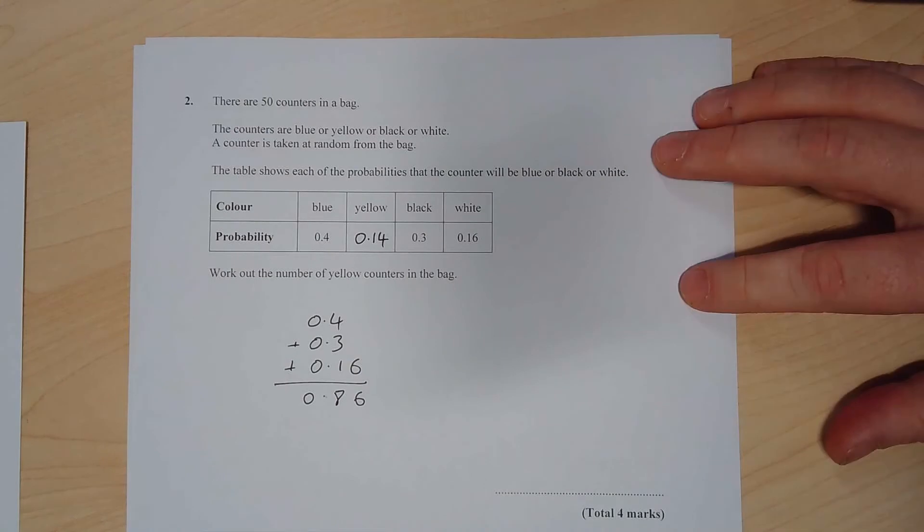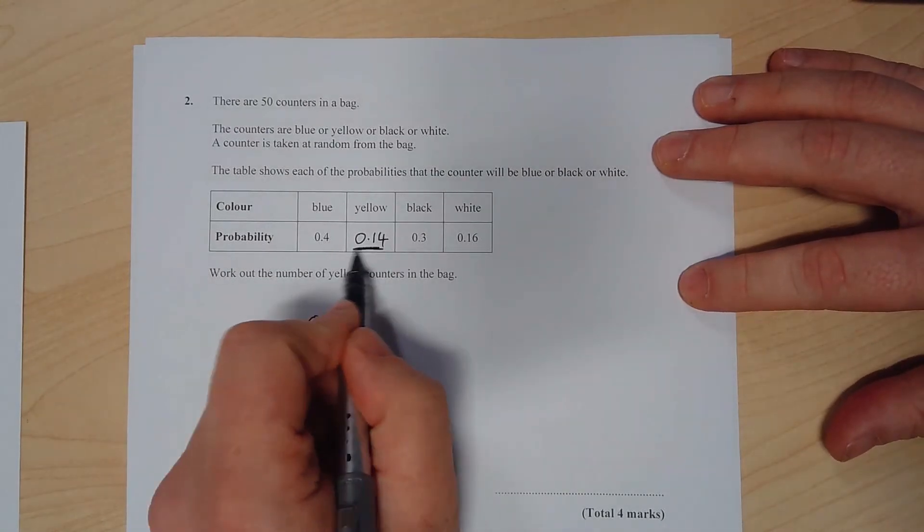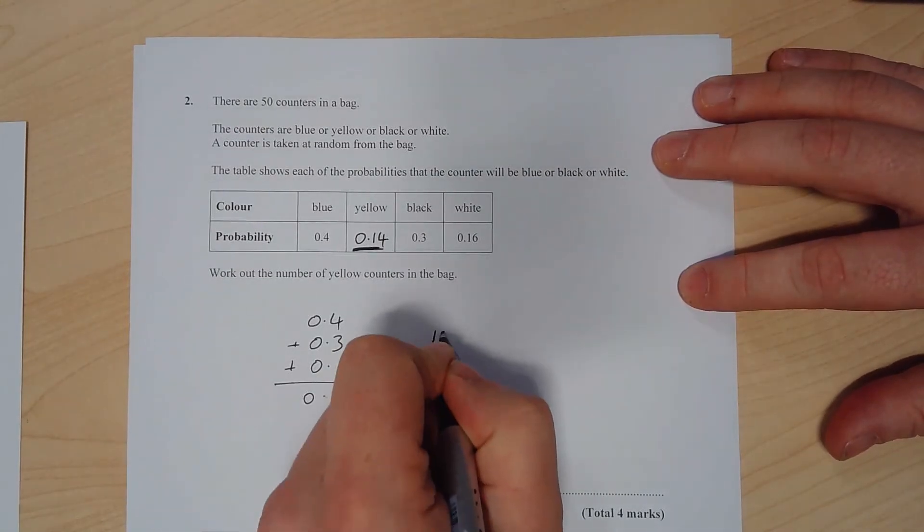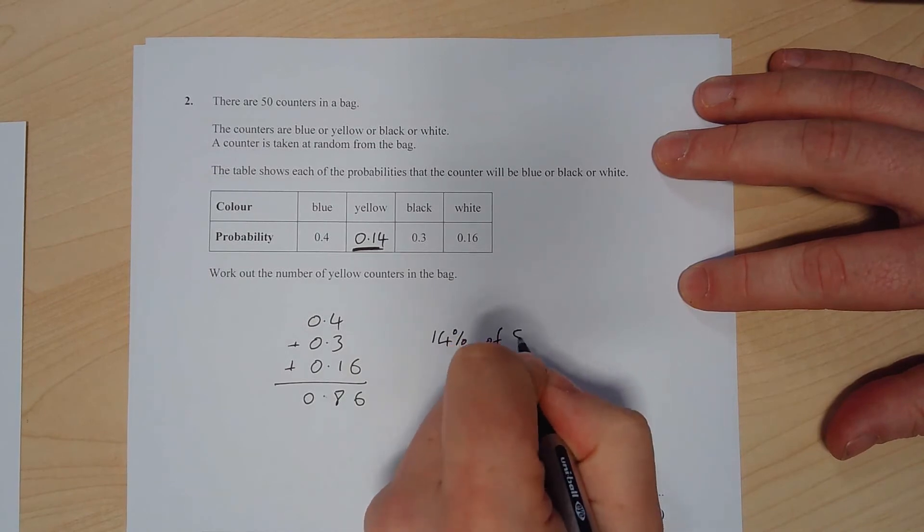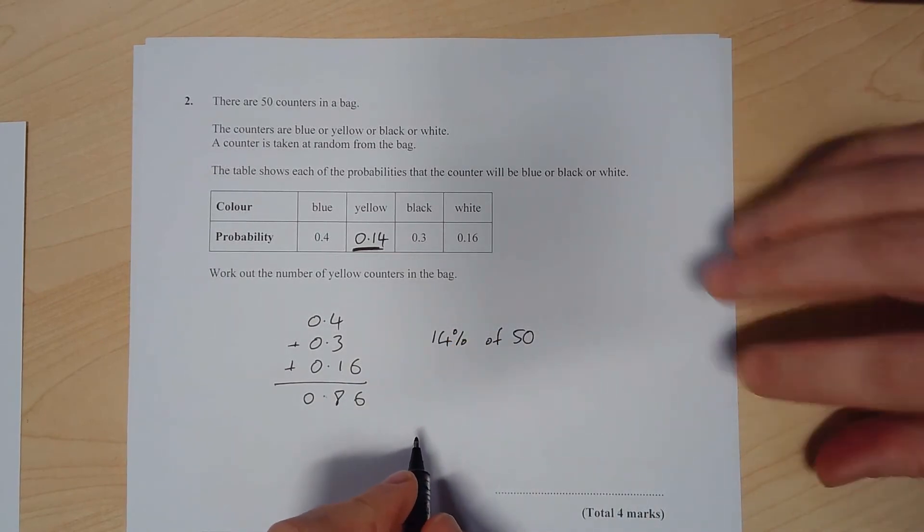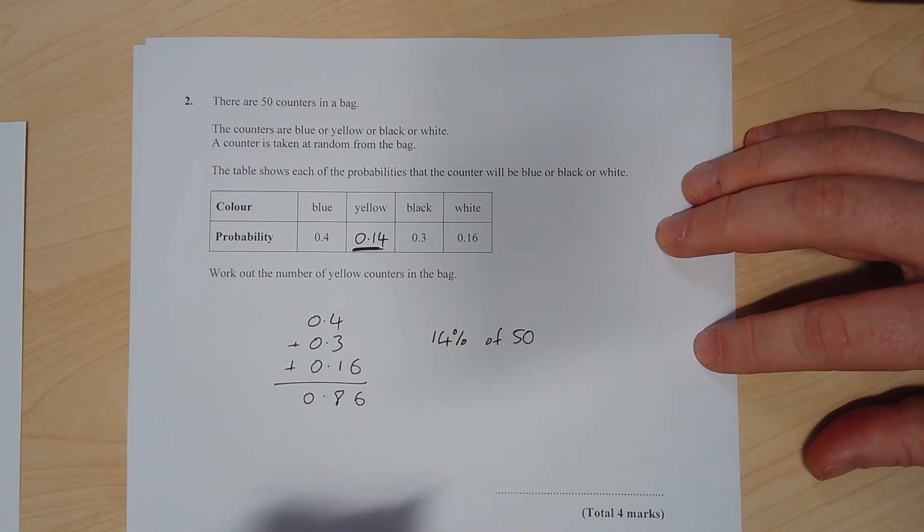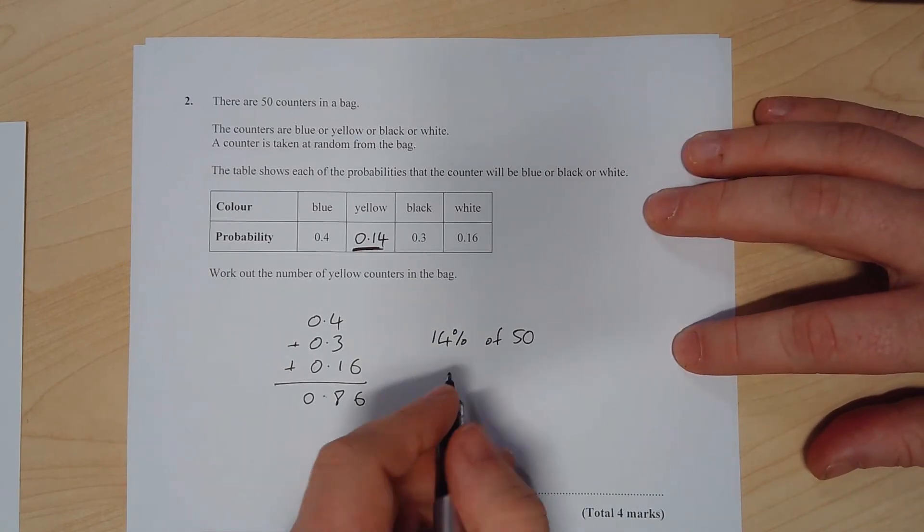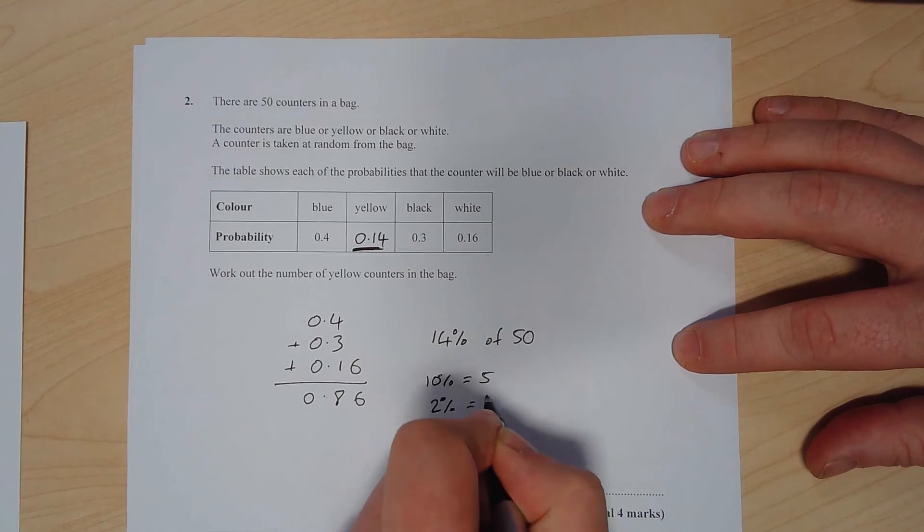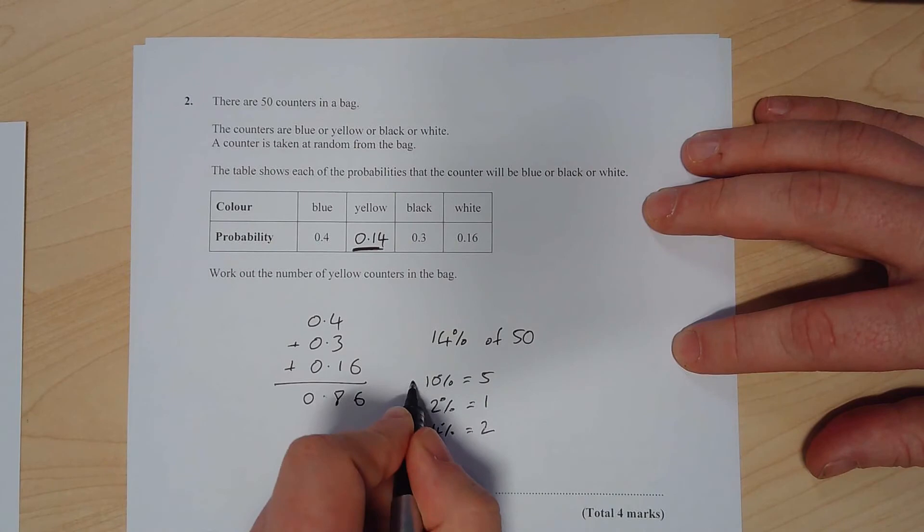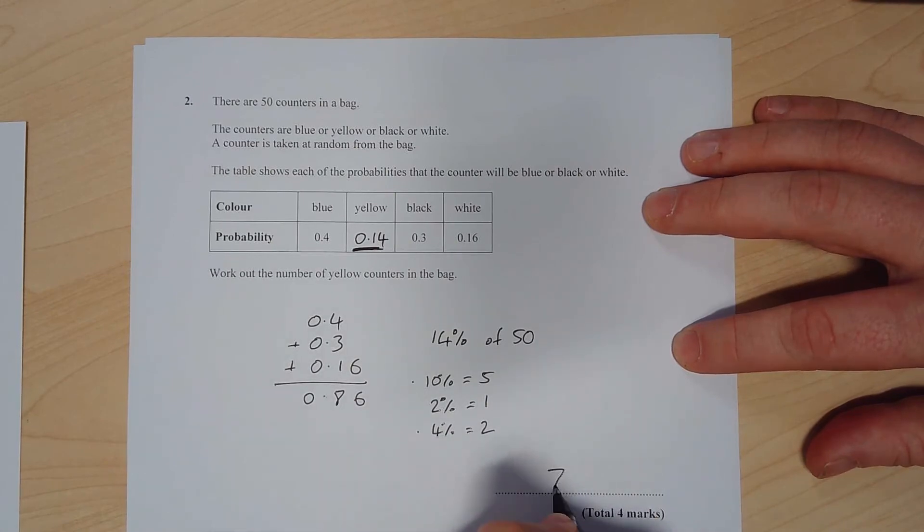Work out the number of yellow counters in the bag. If I know that 0.14 is the probability of getting yellow, what that means is 14 percent of the counters must be yellow. So 14 percent of 50 - I think the easiest way of working this out is probably swap it over and do 50 percent of 14. But if you're not sure about that, we'll do: 10 percent is 5, so 2 percent is 1, so 4 percent is 2. And my 10 percent plus my 4 percent means the answer must be 7 counters.